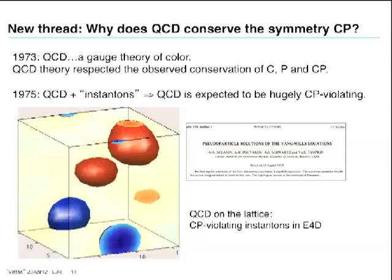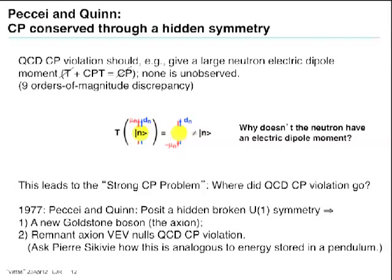One solution is to throw instantons away, but they solve the irksome problem of light meson masses, among other things. So are the light meson masses just an accident? That seems implausible. There's an industry of looking for CP violation in neutrons and atoms — anything that doesn't have a degenerate ground state is useful for this experiment. It's not been found. This leads to the strong CP problem: where did the CP violation go?